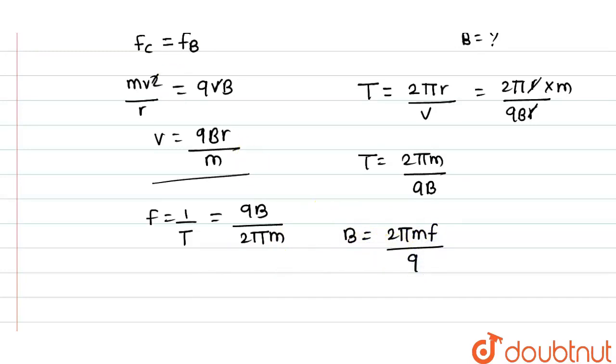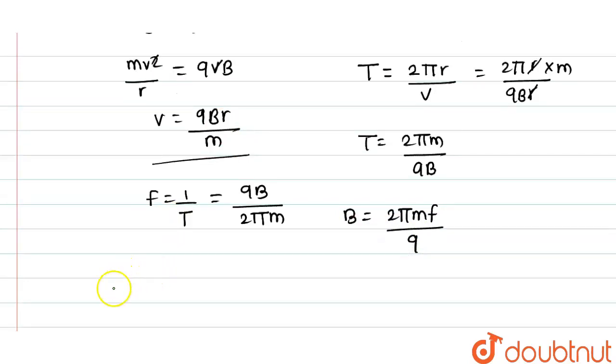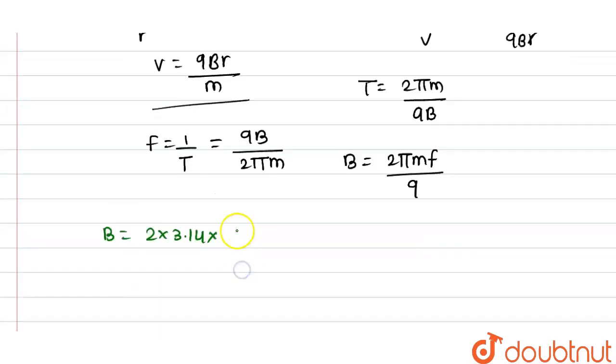We will substitute the values here. So B = 2×3.14×(mass of proton is 1.67×10⁻²⁷ kg)×(frequency is 5×10⁶ Hz).